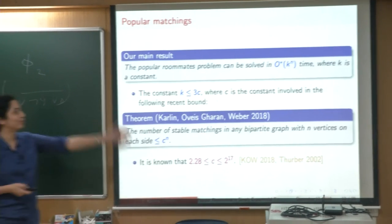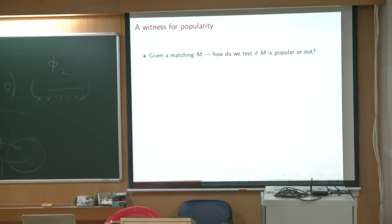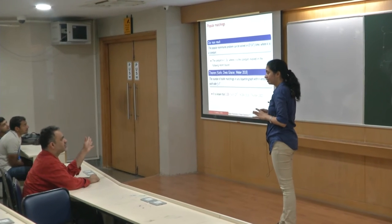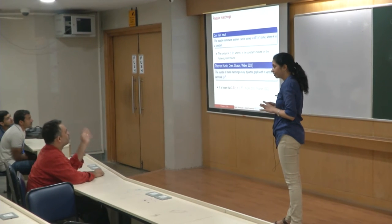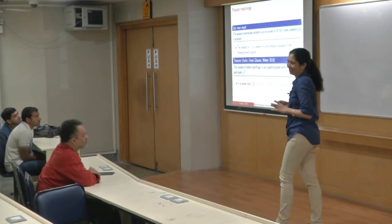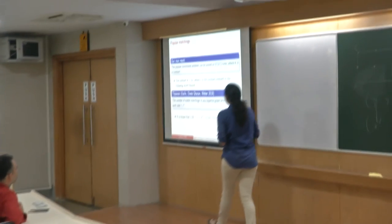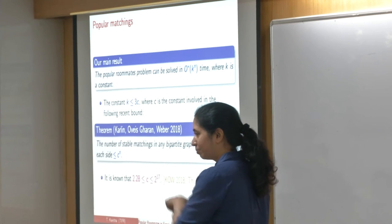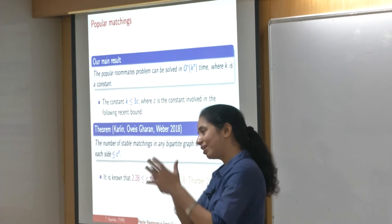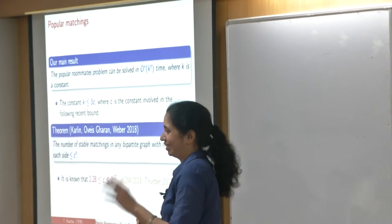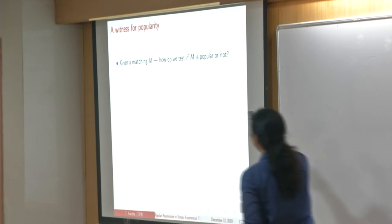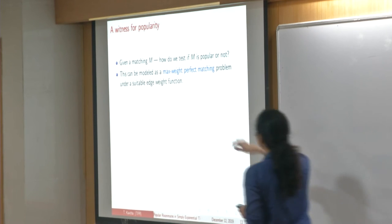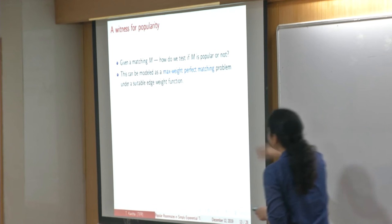Indeed, as the bound for c improves, our bound will also improve. Ram Prasad was asking: can we bound our running time as a function of the number of stable matchings rather than just give a hard bound on it? Indeed, it is a function of how many stable matchings the given graph and some subgraphs have, though I should be a little more careful before saying yes too quickly. So let's start from: given a matching M, how easy is it to test if M is popular or not? There are combinatorial algorithms for it, but I would rather use the machinery of max weight perfect matchings.